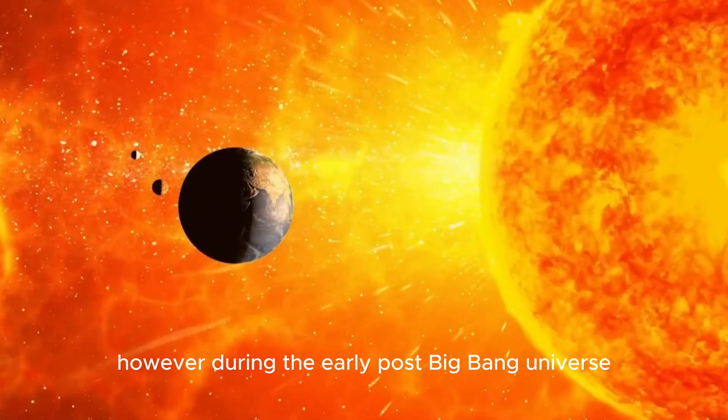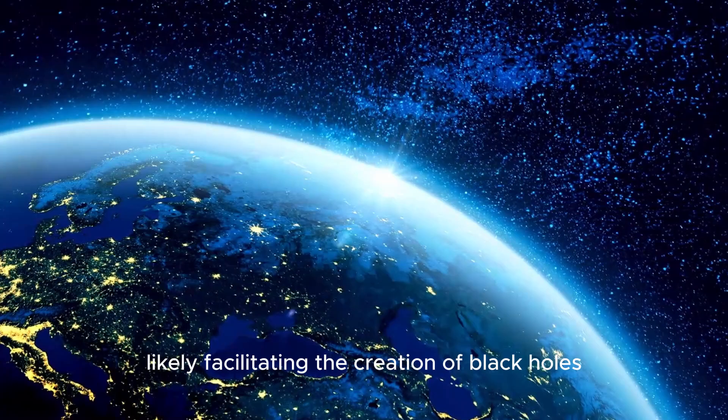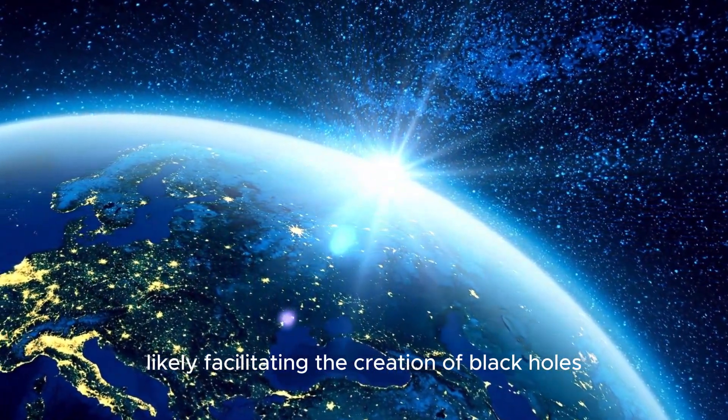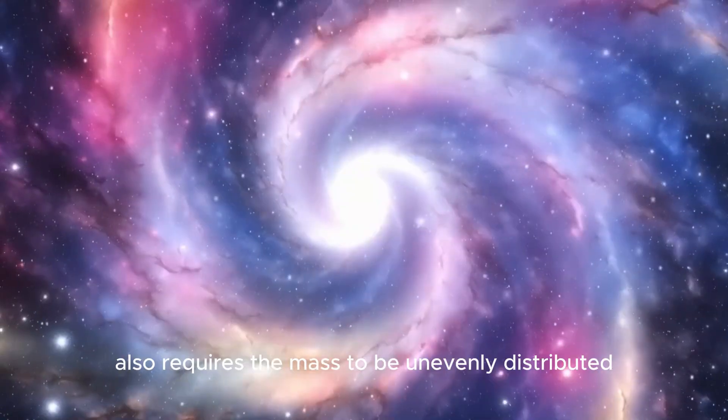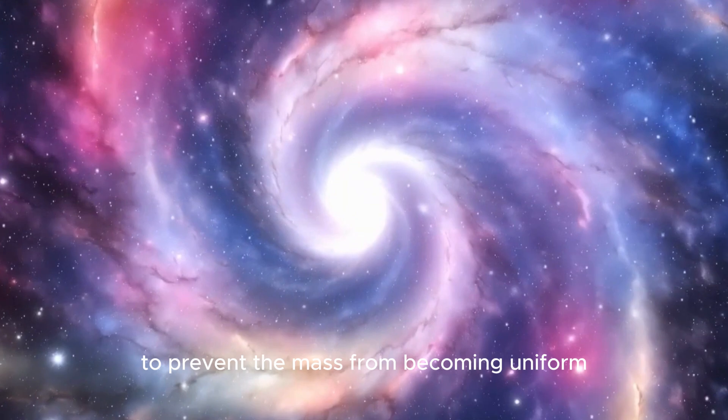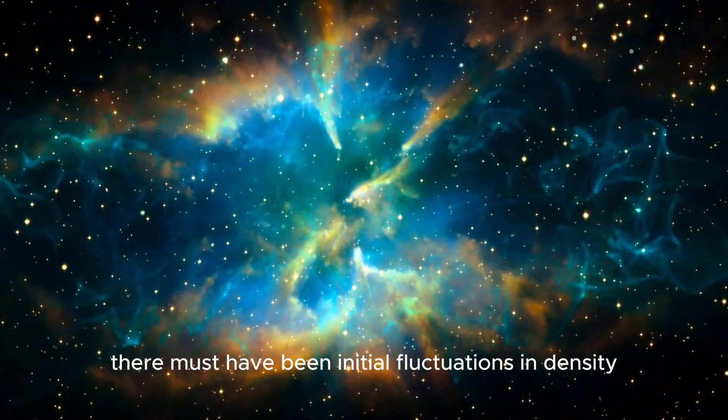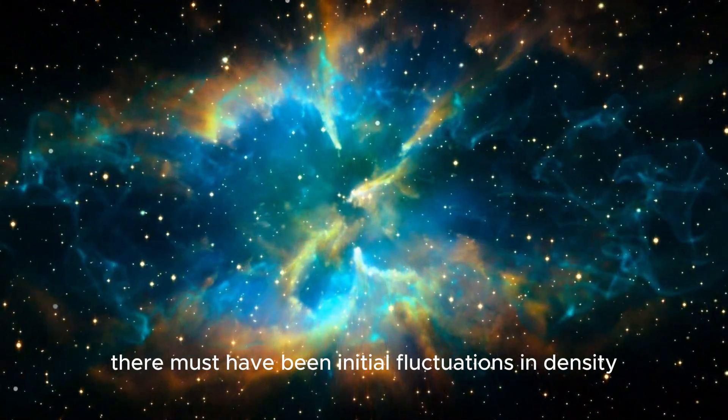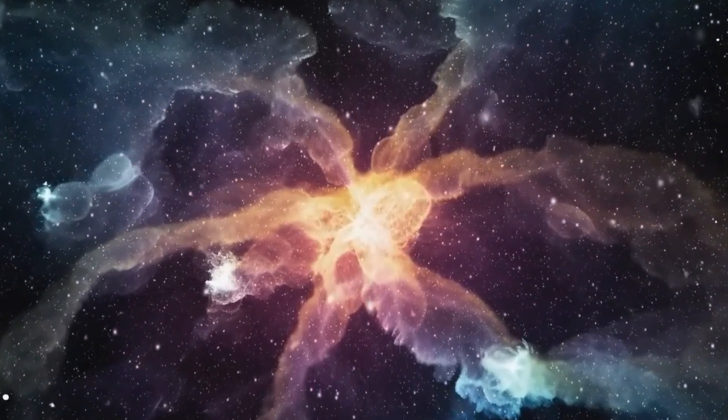However, during the early post-Big Bang universe, densities were significantly higher, likely facilitating the creation of black holes. Apart from high density, black hole formation also requires the mass to be unevenly distributed to prevent the mass from becoming uniform. For primordial black holes to form in such dense environments, there must have been initial fluctuations in density, which subsequently allowed them to grow via gravity.